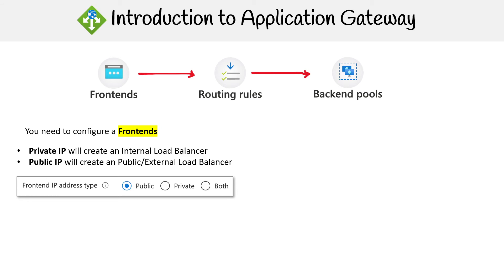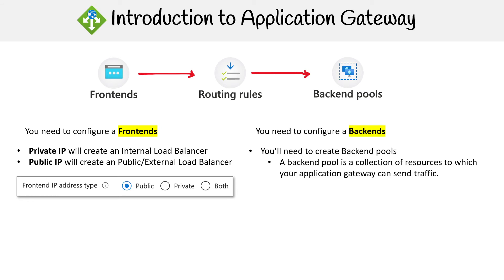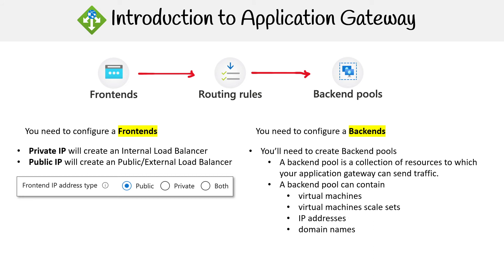You really just need to know the public and private options. For the backends, you create backend pools — a backend pool is a collection of resources to which your Application Gateway sends traffic. A backend pool can contain virtual machines, virtual machine scale sets, IP addresses, domain names, App Service, and you can also send traffic to on-premises resources.